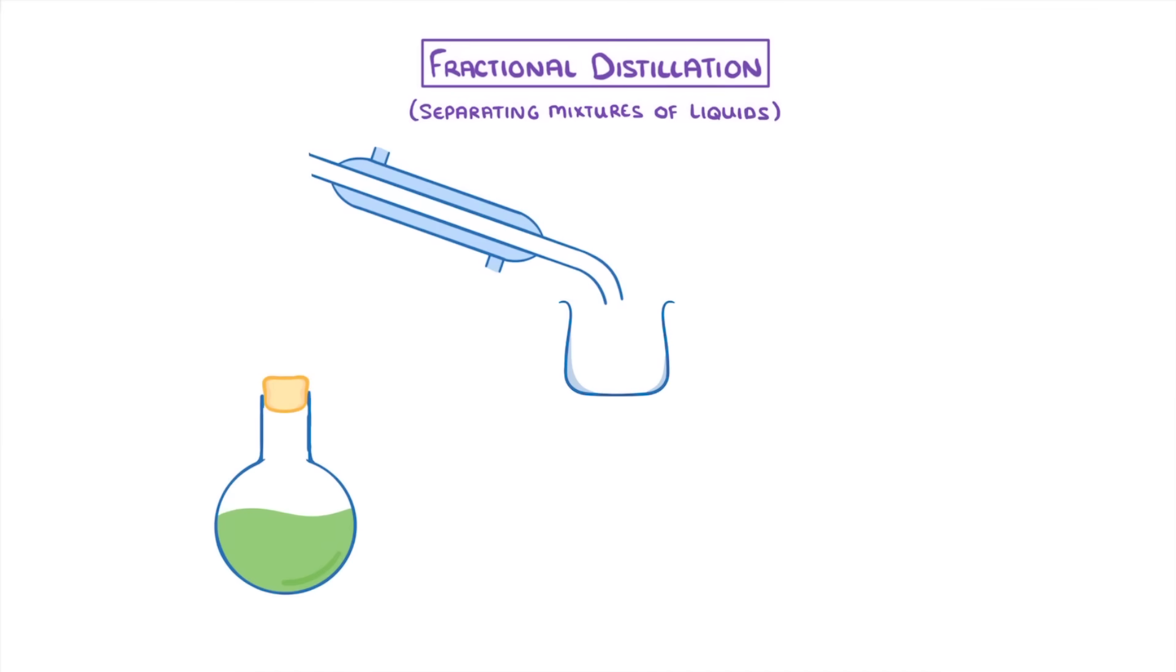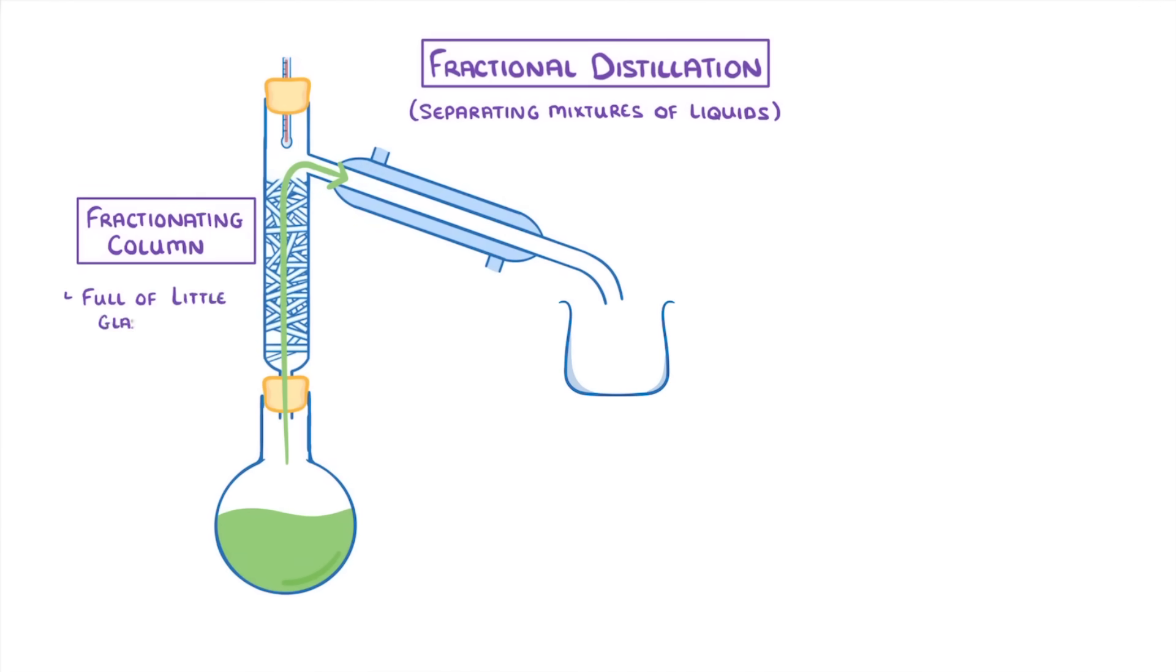The equipment for this is pretty similar, but instead of the gas passing straight from the flask into the condenser, the vapours have to first pass through a fractionating column, which has two key features. One is that it's full of little glass rods, which provide a really high surface area. And the other is that because the column is so tall, it's actually cooler at the top than it is at the bottom.